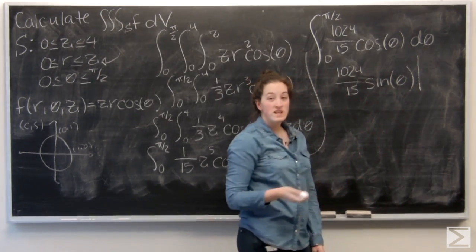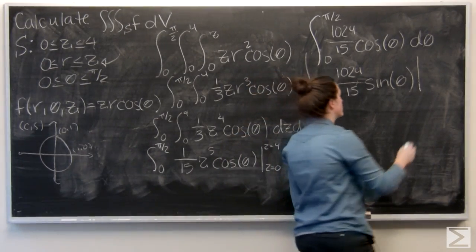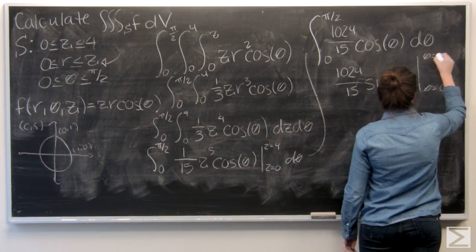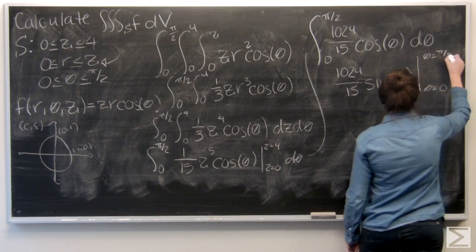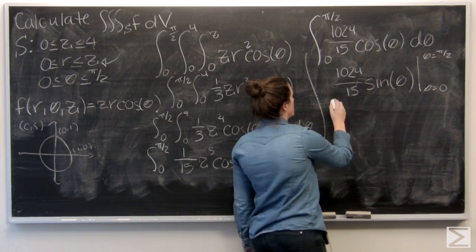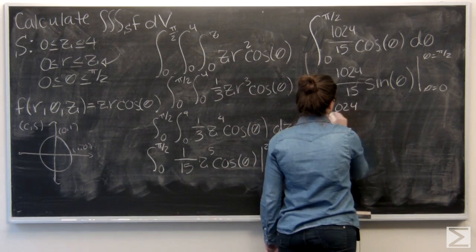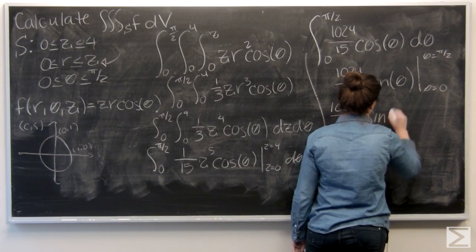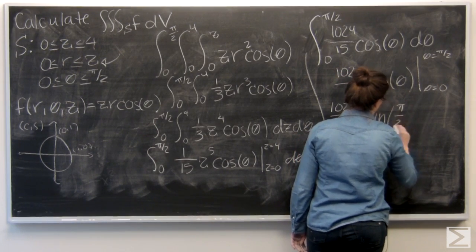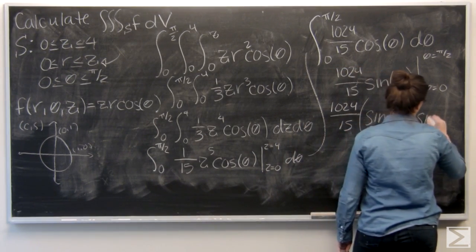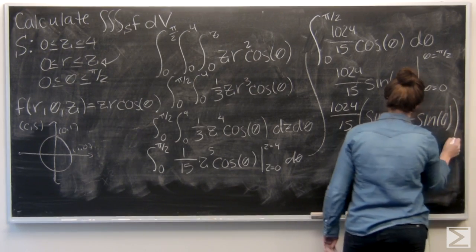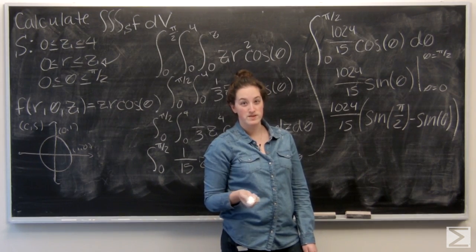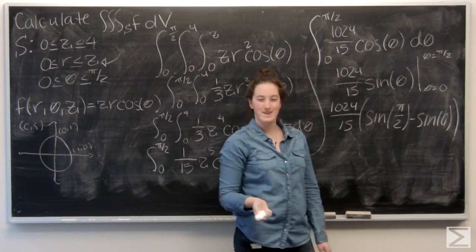Now I'm evaluating from theta equals 0 to theta equals pi over 2. So let me go ahead and plug my theta in. So now I need to find sine of pi over 2 and sine of 0.